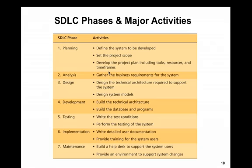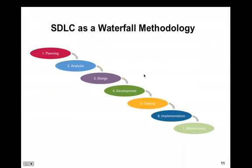It's called the waterfall model because it kind of goes downhill — everything flows down like a waterfall. The seven steps are arranged so that one goes to the next, to the next, to the next.